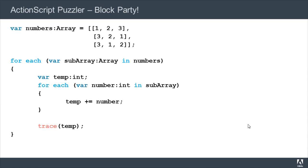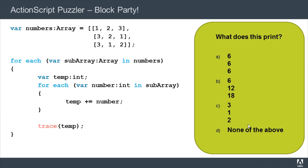Now that you have a rough idea of what this program does, here's the question. What does this program print? Does it print A, 666? B, 61218? C, 312? Or D, none of the above? Remember, think hard.